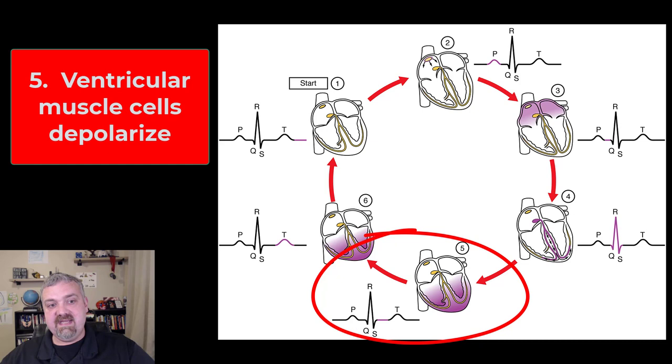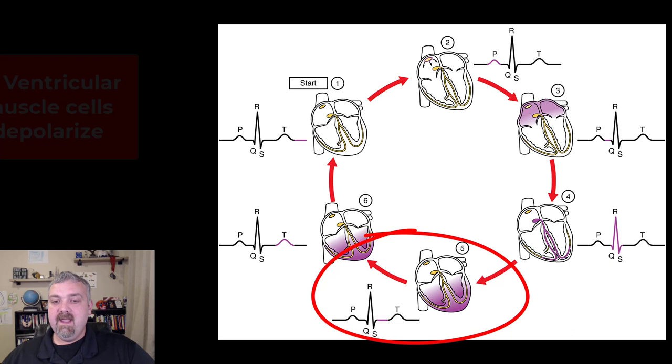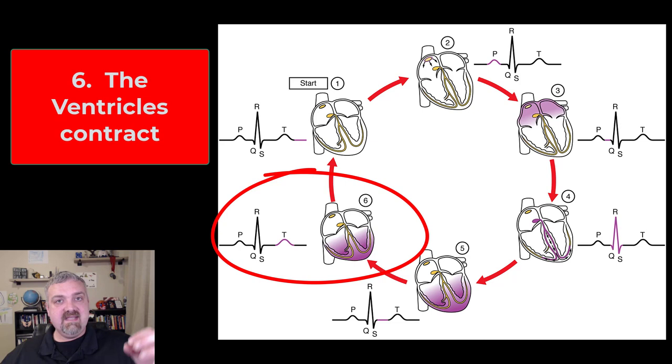Step five. So now the ventricles have been depolarized. That was the QRS complex on your EKG there. Step five, this impulse is going to travel all the way through the ventricles. And then step six, the ventricles are going to contract.